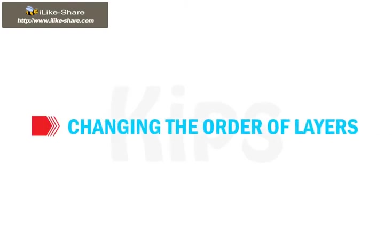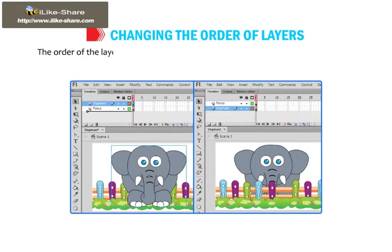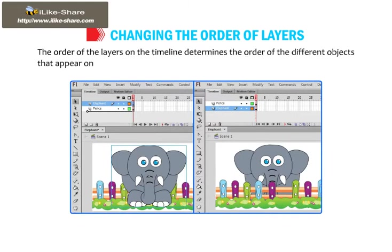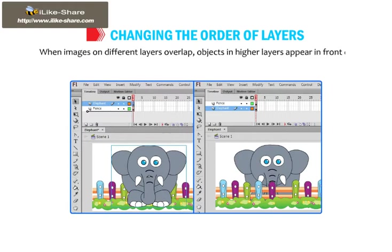Let's find out how to change the order of layers. The order of the layers on the timeline determines the order of the different objects that appear on the stage. When images on different layers overlap, objects in higher layers appear in front of objects in layers below them.